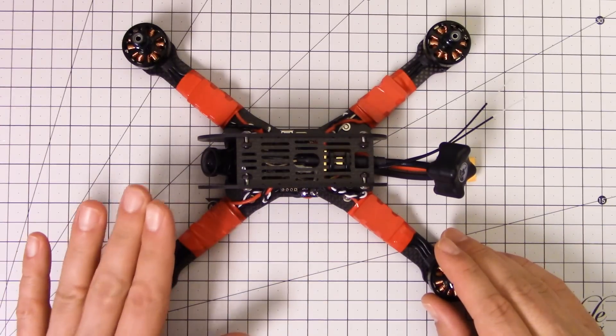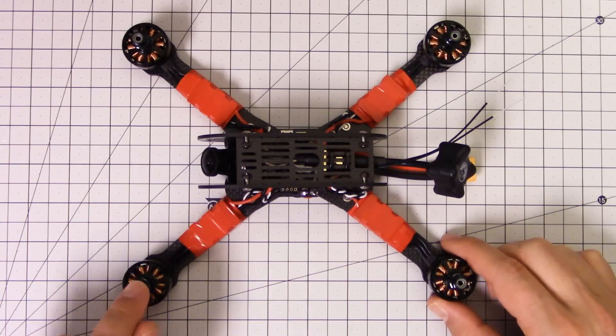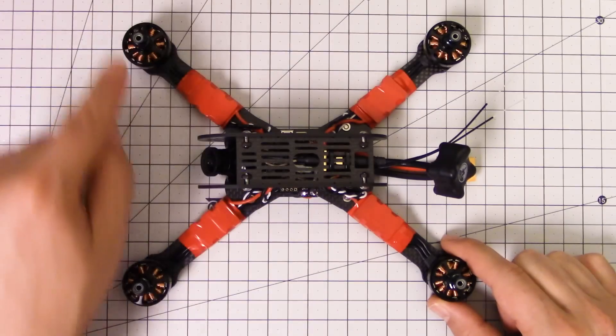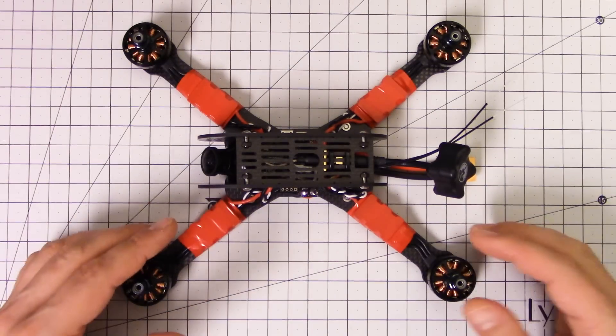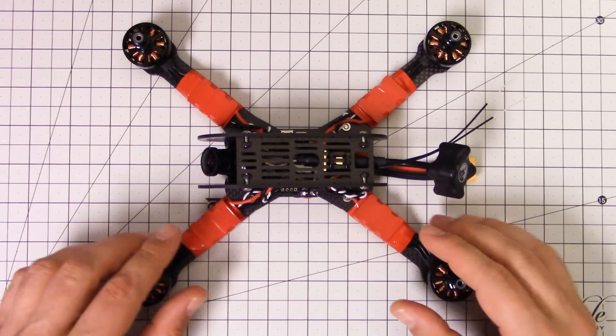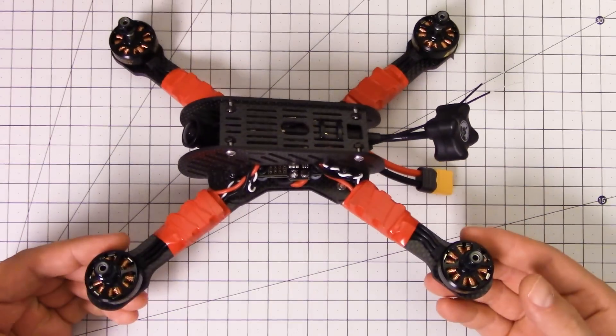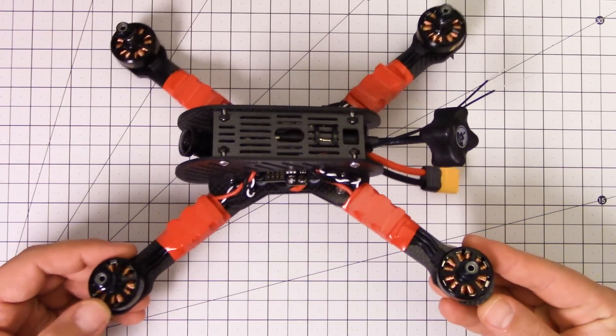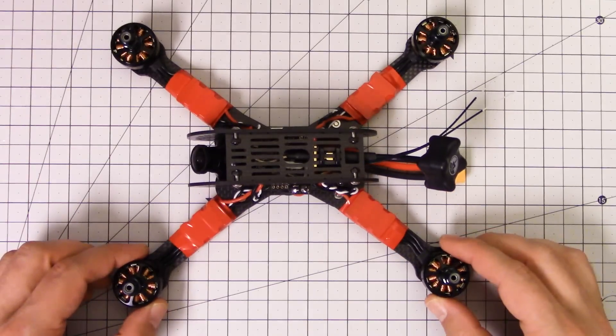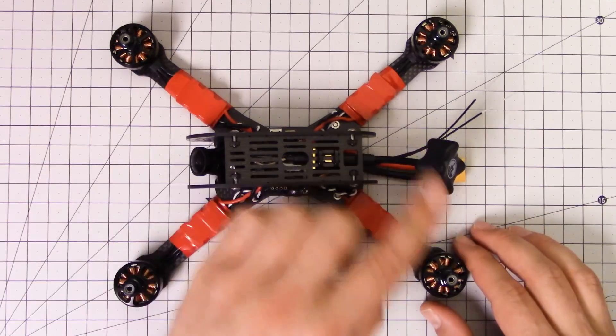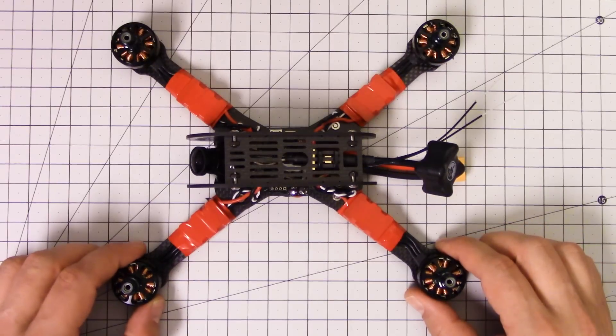This one struck my interest because it's an example of a thing called the stretched X motor layout, stretched X arm layout. And before I get into talking about this copter and making All Carbon RC very happy that I'm sort of plugging their product, let me talk to you guys a little bit about what that is and what the advantages might be.